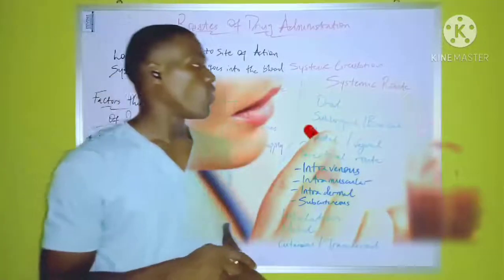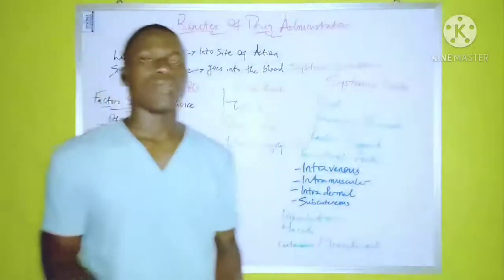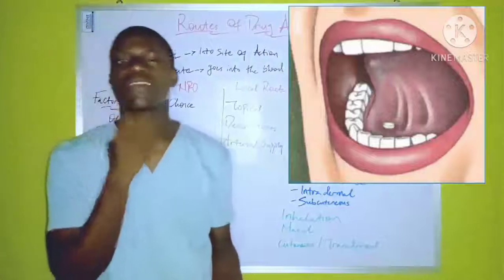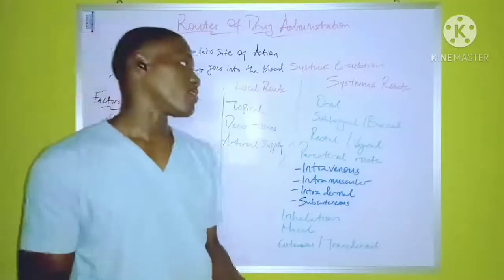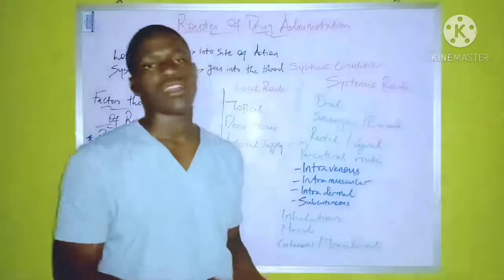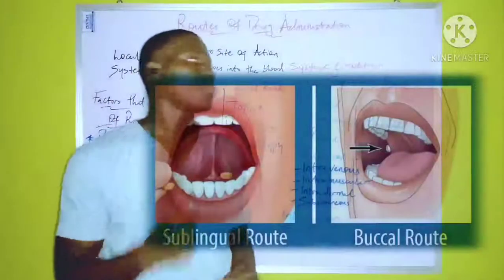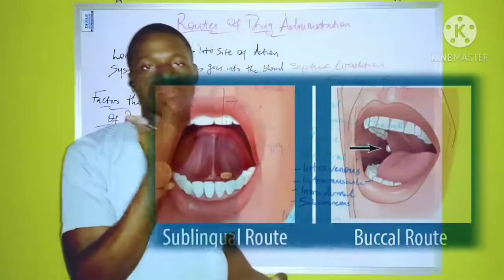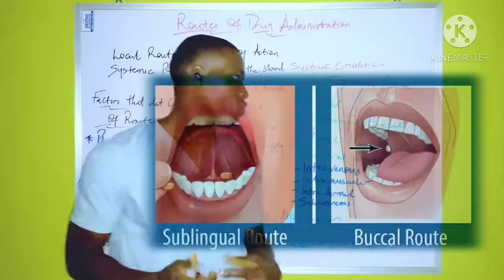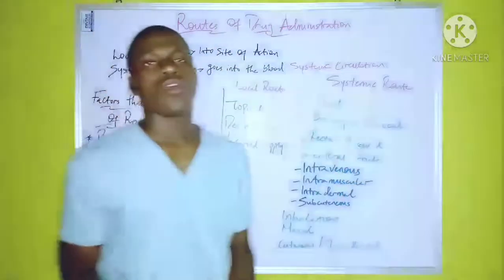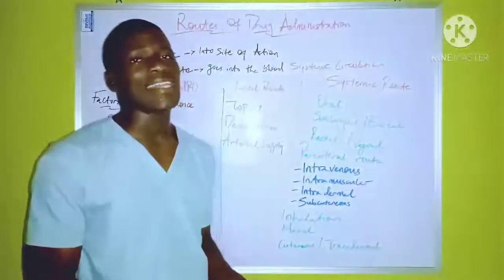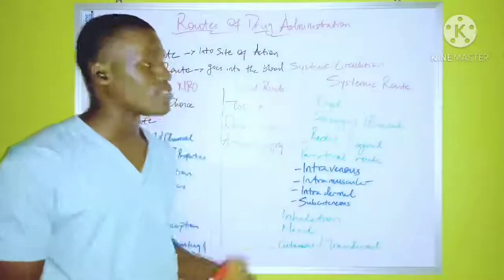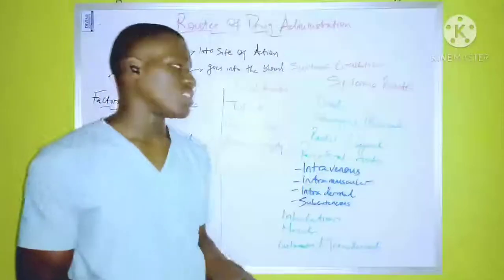The next is the sublingual or buccal route. The sublingual route involves the placement of the medication underneath the tongue. Due to the increased number of blood vessels in that region, the drug is absorbed faster into the bloodstream, thereby escaping metabolism by the liver. For the buccal route, the drug is placed in the cheek. One disadvantage of both routes is that the patient is likely to spit out the drug, because the medication needs to remain in the mouth for a particular duration. So the patient should be watched carefully while on this medication.